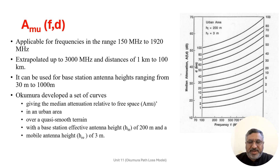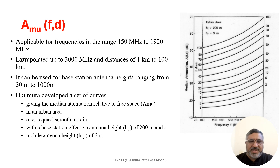The AMU factor is used to estimate the median attenuation of a signal with respect to frequency and distance for the Okumura model. This model is applicable for frequencies in the range of 150 MHz to 1920 MHz, although it is typically extrapolated up to 3000 MHz, and for distances from 1 km to nearly 100 km. It can be used for base station antenna heights ranging from 30 m to 1000 m. Okumura developed a set of curves giving the median attenuation relative to free space in urban areas over quasi-smooth terrain with a base station effective antenna height HDE of 200 m and mobile antenna height HRE of 3 m.